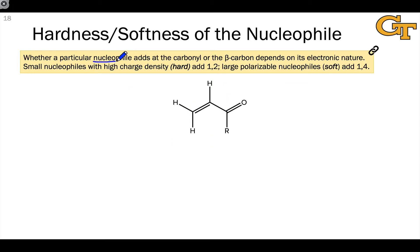So first, let's discuss the nucleophile. Whether a particular nucleophile adds directly or in a conjugate fashion, 1,2 or 1,4, depends on what's called its hardness. Small nucleophiles with concentrated charge are called hard. These add in a 1,2 fashion, while diffuse polarizable nucleophiles, which are called soft, add in a 1,4 fashion.